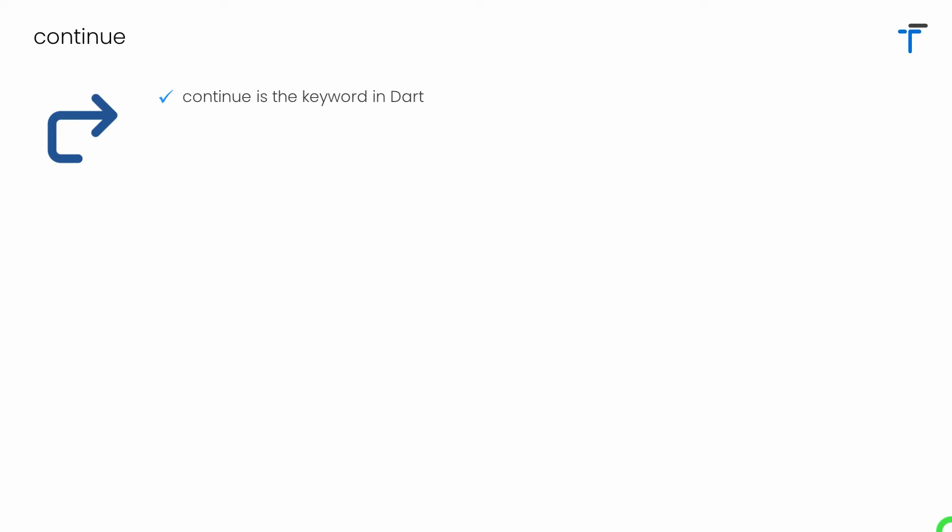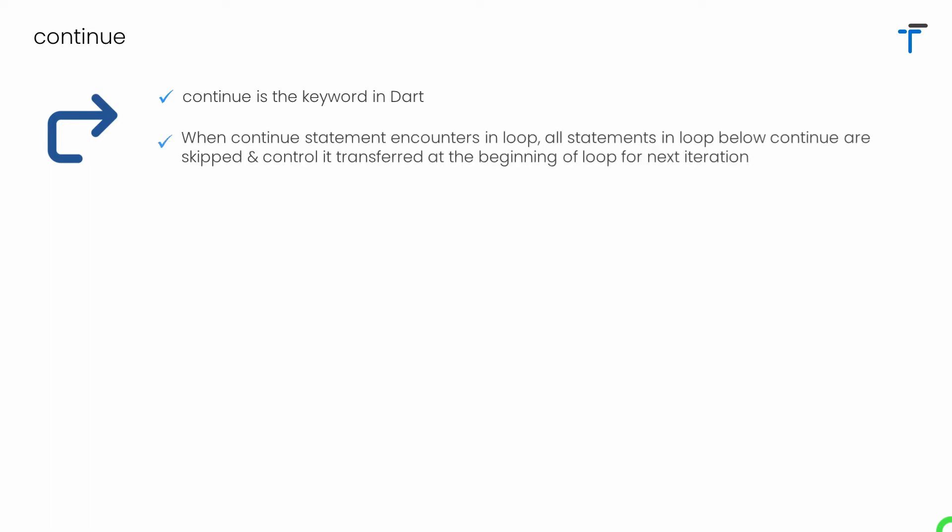Continue is actually a keyword in Dart. When the continue statement runs or is encountered in a loop, all the statements below continue will be skipped and control is transferred to the beginning of the loop for the next iteration. Continue can only be used inside a loop — if you try to use it elsewhere, you will get an error. Dart supports regular continue as well as labeled continue.